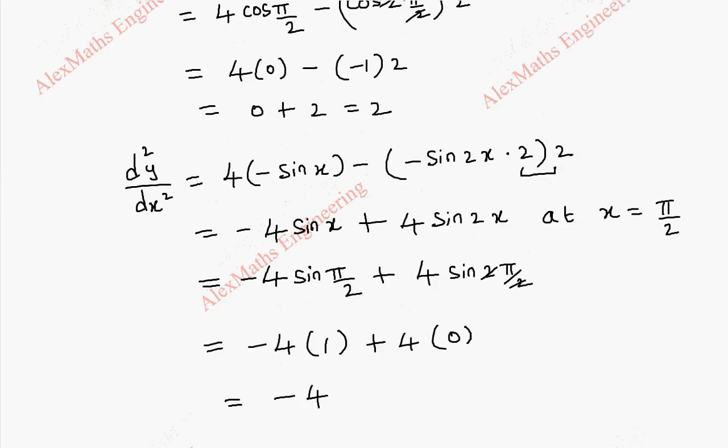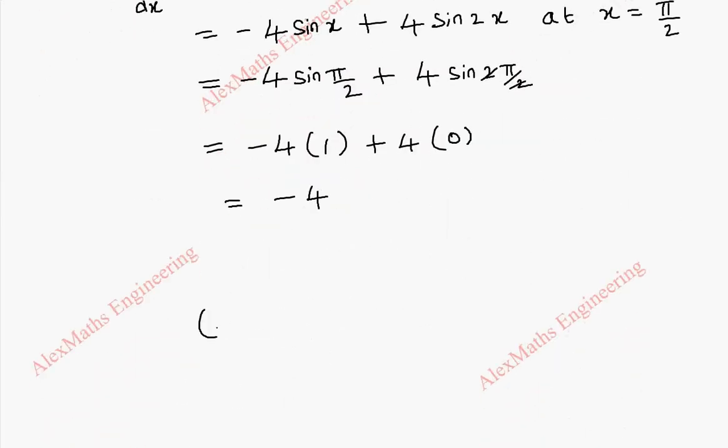Now we have to find its radius of curvature. The formula is rho equal to 1 plus dy by dx whole square and whole power 3 by 2 whole divided by d square y by dx square.